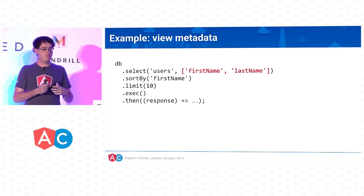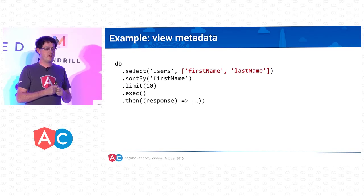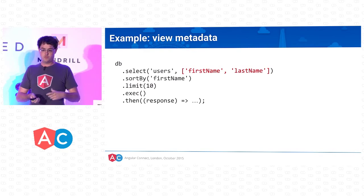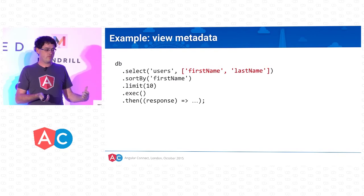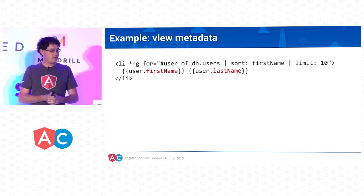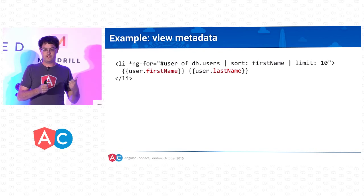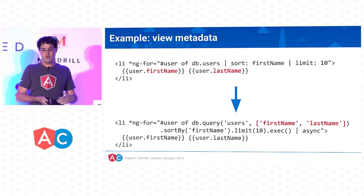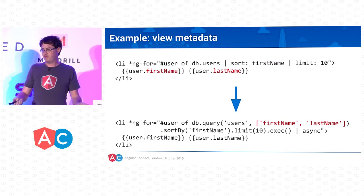On mobile devices, it's a really bad idea to download more data than you need. Our database API probably lets us specify just the fields we want to fetch. But we don't have to change our template at all — the information about what fields are needed is already right there. The transformer can see them and rewrite the expression to make that optimized call automatically. As a developer, you don't have to specify the fields twice.